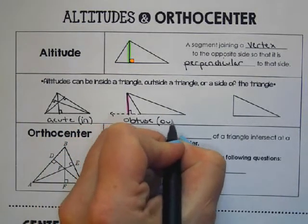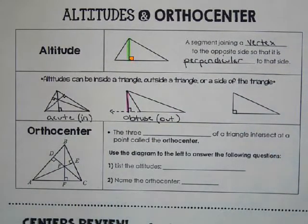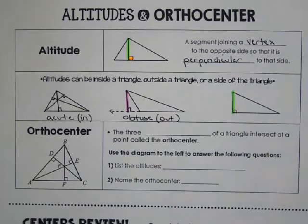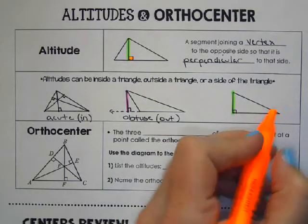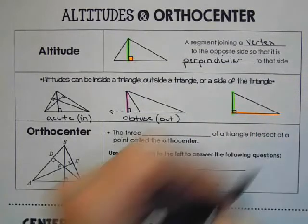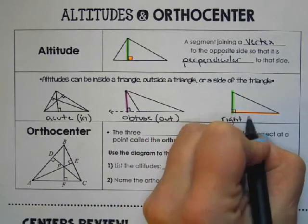And then in a right triangle, if we go from the vertex to the opposite side, that's one altitude. That's another altitude. And the third altitude can be inside, but in a right triangle, they can be on the triangle.